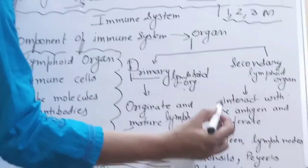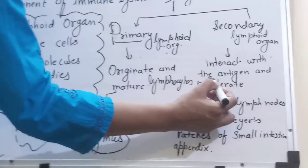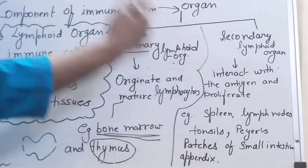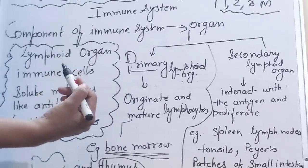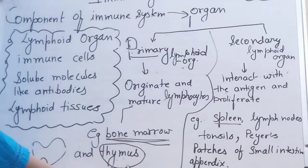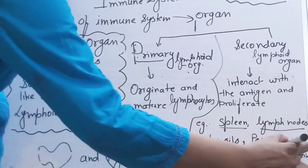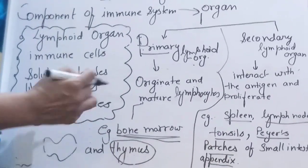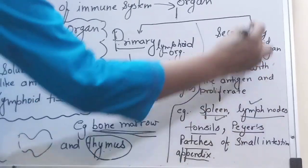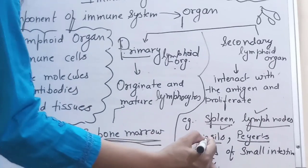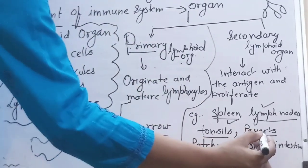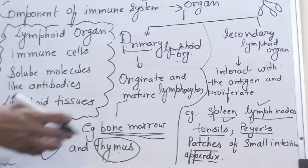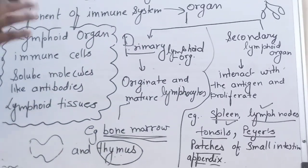Secondary lymphoid organs interact with the antigen. When the antigen comes, they start interaction and proliferate — meaning they produce more in number, they increase. This secondary lymphoid organ includes spleen, lymph nodes, tonsils, Peyer's patches found in the small intestine, and the last one is the appendix.